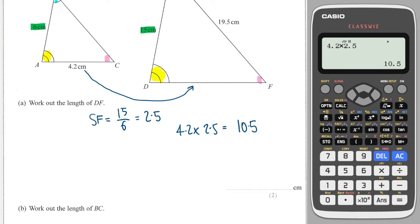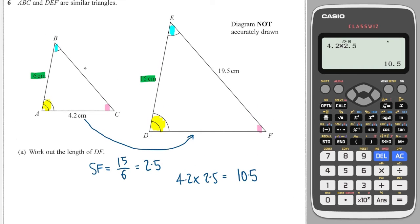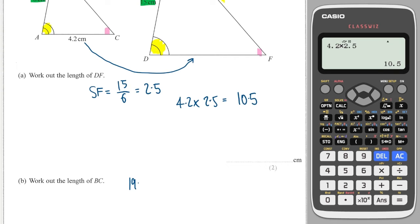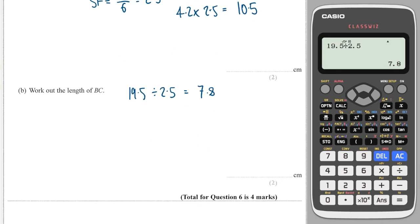Now I've got to work out BC. BC is this side, which is opposite the yellow angle. Opposite the yellow angle on this side is 19.5. I want to go back to the smaller shape, so I have to divide. So it's 19.5 divided by the scale factor of 2.5, and we get 7.8.